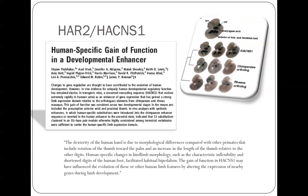Another candidate gene is HAR2, Human Accelerated Region 2, otherwise known as HACNS1. This appears to be a gene involved in the development of the hand in particular, and it's thought that changes in this gene might have underpinned the development of the opposable thumb that we have and chimpanzees lack, giving us the dexterity that is characteristic of humans.